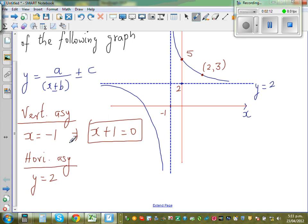So by just looking at these two facts, I can write the equation like this. Y is equal to a over this thing, which is x plus 1, plus 2. Just like that.